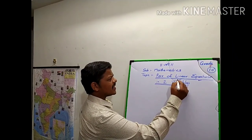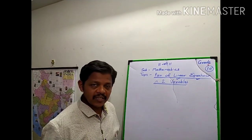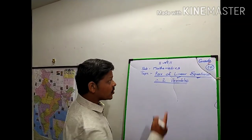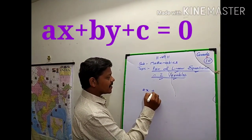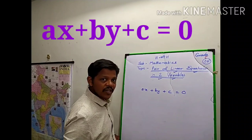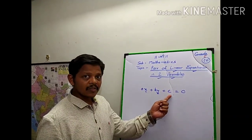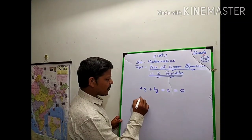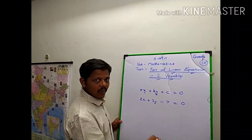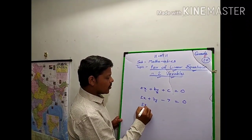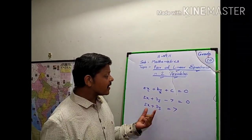When we say linear equations, you already know what linear equations are. Last year we studied linear equations in two variables. Do you remember the form? It was Ax plus By plus C equal to 0, where x and y were the variables, A and B were the coefficients, and C was the constant term. For example, 2x plus 3y minus 7 equal to 0, which we used to write as 2x plus 3y equal to 7. This was a linear equation in two variables.